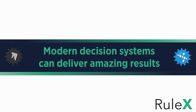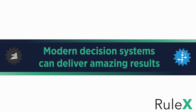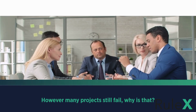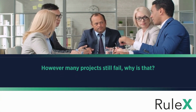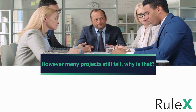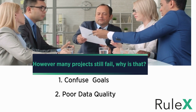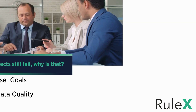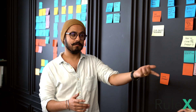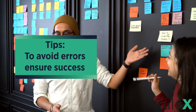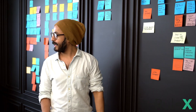Modern decision management systems, which support and automate business processes, can deliver some pretty amazing results. However, many projects still fail. Why is that? Confused goals and poor data quality are among the main reasons for failure. Here are some tips on how to avoid the most common errors and ensure the success of your project.